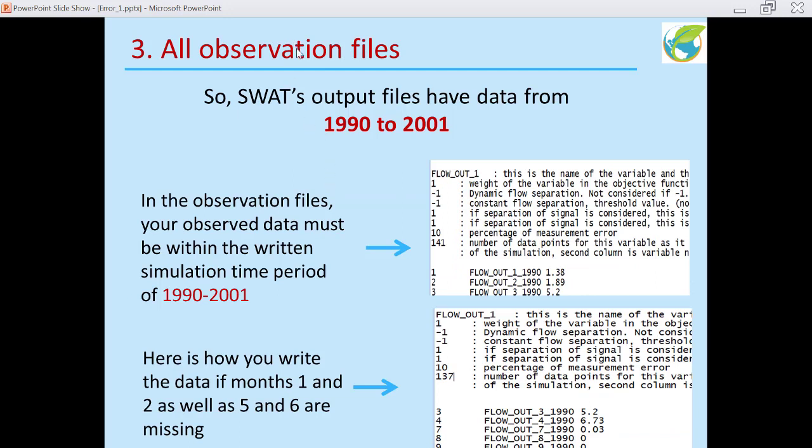Other sets of files are all the observation files. So you have observed.txt, you have observed_HRU.txt, observed_RCH.txt, and so on and so forth. So all of these files have to have data within this period, 1990 to 2001, because that is when SWAT writes its output simulations.